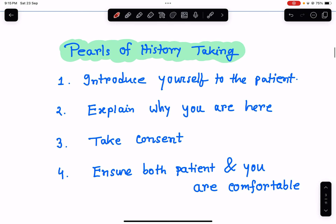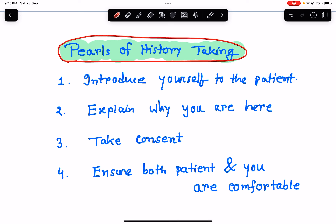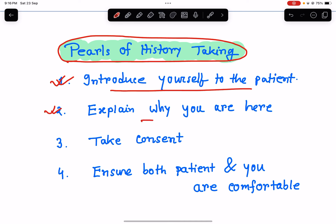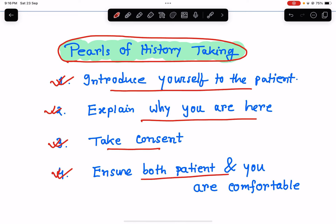Initially, I will tell you certain parts of history taking and how we should begin. First of all, you introduce yourself to the patient. Let the patient know who you are and explain why you are there and what is the importance of history taking. Take consent before you do anything — before you take history, before you do physical examination or any procedure. Then ensure that both the patient and yourself are comfortable. Sit in a comfortable place, in a comfortable room, and then start taking the history.